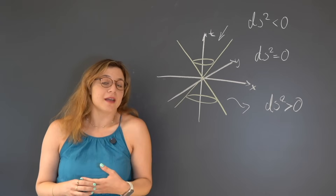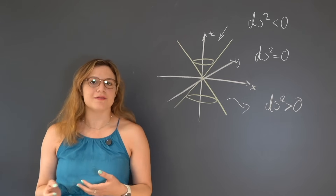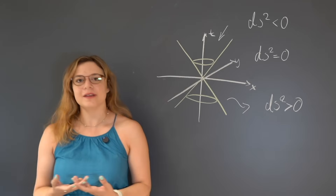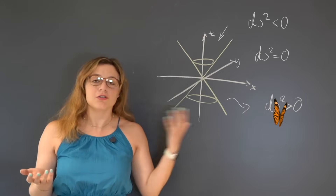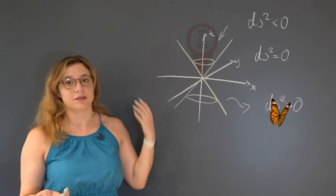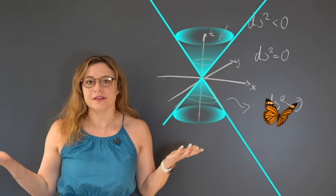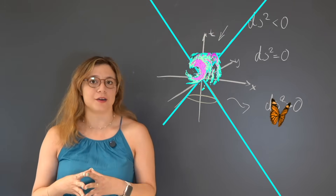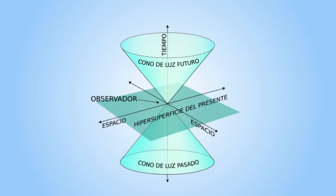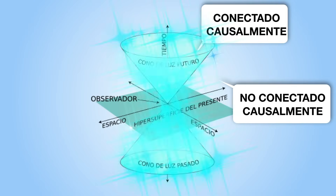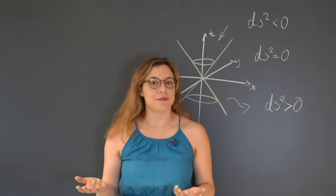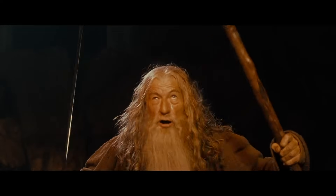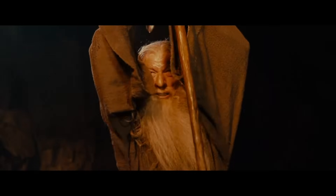Events outside the cone are happening somewhere in the universe, but they cannot have any influence on what is happening with you now, in the present. For instance, no matter how hard a butterfly that is causally disconnected with you — outside of the light cone — is flapping its wings, it can never have caused a hurricane that you are experiencing right now. So in Lorentzian space-time, not everything is connected. The light cone acts like a filter, telling you what is accessible to each other and what is not. You shall not pass!